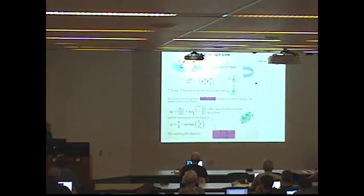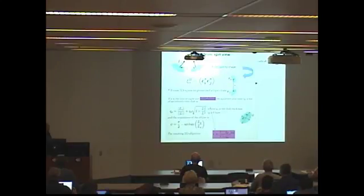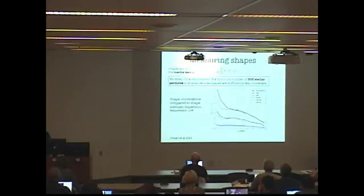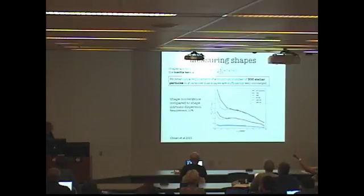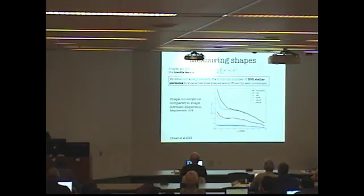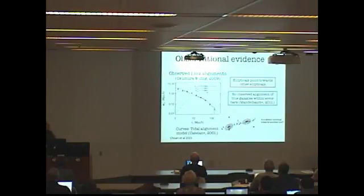For the II term, it's the correlation between spins of two galaxies as a function of distance. You can make a simple model going from spin to shape, or directly measure shape in the simulation using the inertia tensor on stellar particles — which is what Elisa Chisari has been doing at Oxford. She measures this on stellar particles of our galaxies and checks convergence.